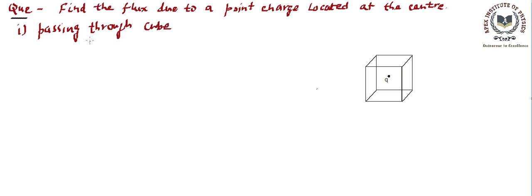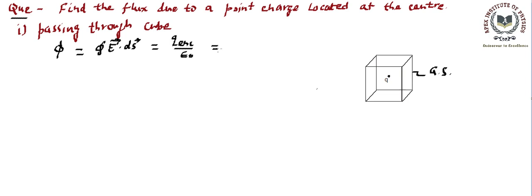To solve this, we could integrate E dot dS directly, but that would be complicated. Since the cube forms a closed surface, we can treat it as a Gaussian surface. As per Gauss's Law, the closed surface integral equals the charge inside upon epsilon naught. The charge inside is simply q, so the net flux passing through this cube is q upon epsilon naught.